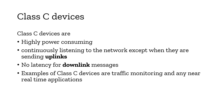Class C devices are the highest power-consuming devices and sometimes require a dedicated power supply. They continuously listen to the network except when they are sending uplinks. All remaining time there is an active connection between the end node and the network server, so you can trigger downlink messages at any time. Class C is mainly used for near real-time applications such as traffic monitoring.